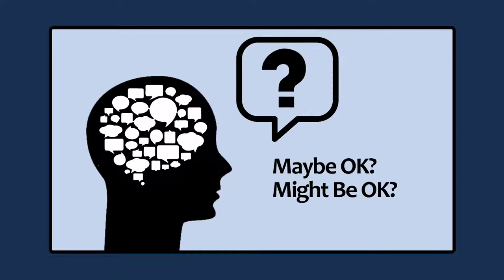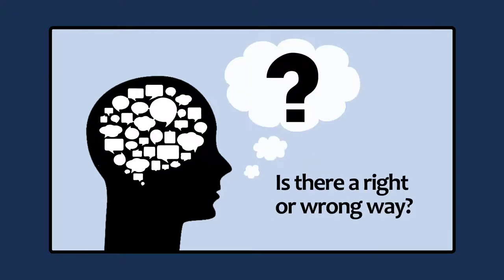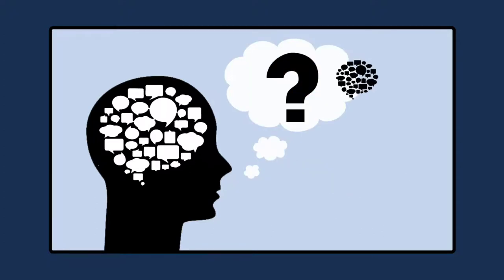Are all things right or wrong? Is maybe or might be acceptable? Is there a right or wrong way? And if rights and wrongs exist, how did we come to form them?